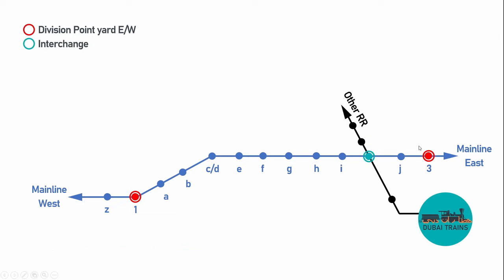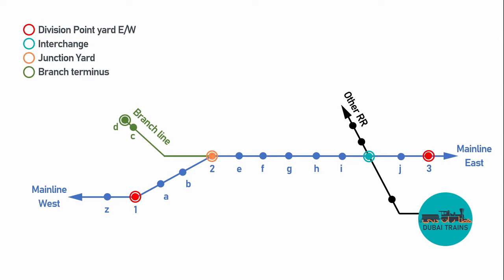The next type is interchange. This is when you have two railroads either intersecting each other or in close vicinity, and you want to get cars from one railroad — in this case the blue one — to the other, the black one. I'll show you several track plans for interchange yards later on.